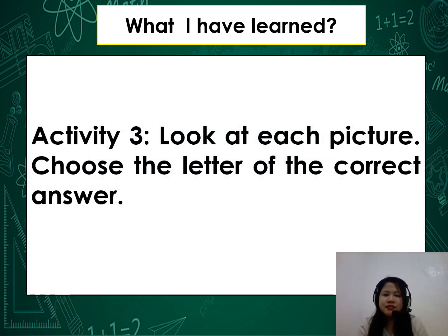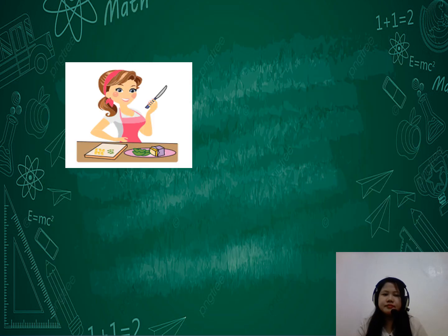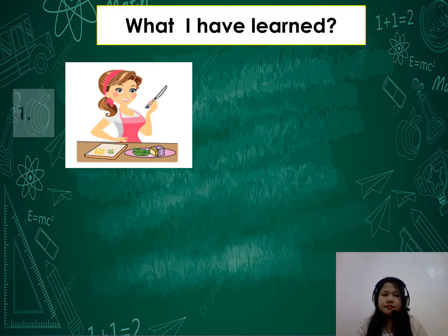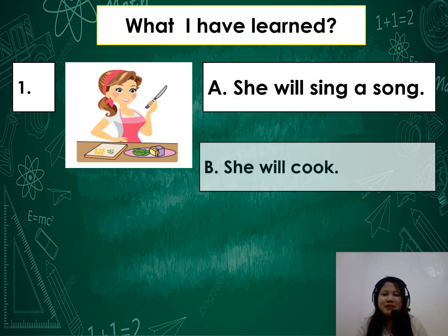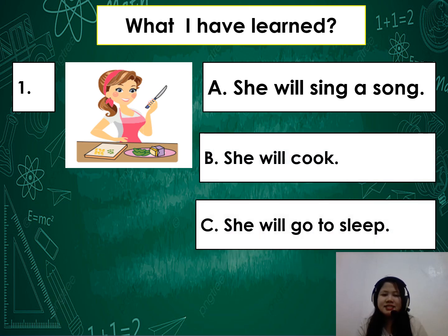For our Activity 3, look at each picture and choose the letter of the correct answer. You will do this activity and submit your output in our Google Classroom. Number 1: Is it A — she will sing a song; B — she will cook; or C — she will go to sleep? Study the picture carefully and choose A, B, or C.